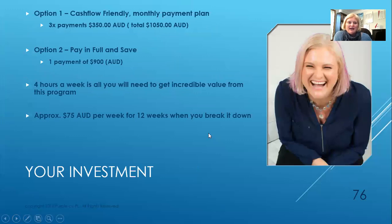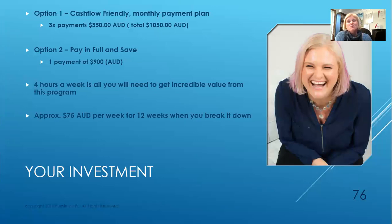There are two ways you can pay. Option one is a cash flow-friendly monthly payment plan — that's three payments of $350 Australian dollars. So I charge in Australian dollars, and there are currency converters. But if you're in the U.S. and watching this, your dollar is much more robust than ours — it's currently sitting at one Australian dollar buying about 75 U.S. cents, so it's only about three-quarters of this price for Americans generally speaking. Option two is where you can pay in full and save — that's one payment of $900 Australian dollars.